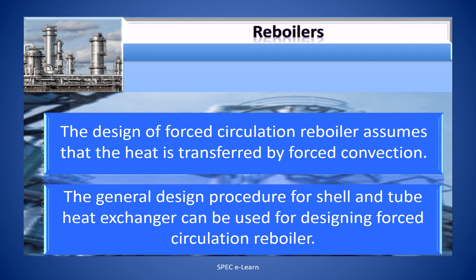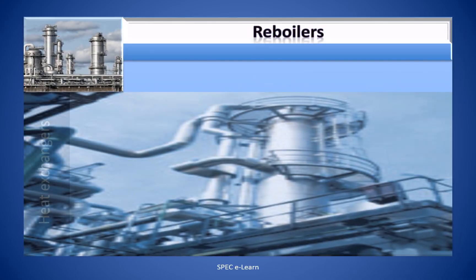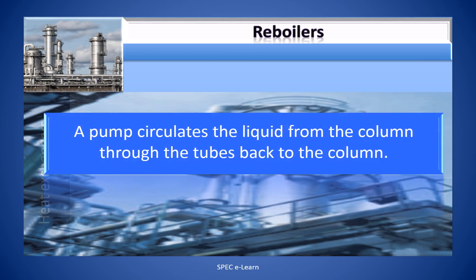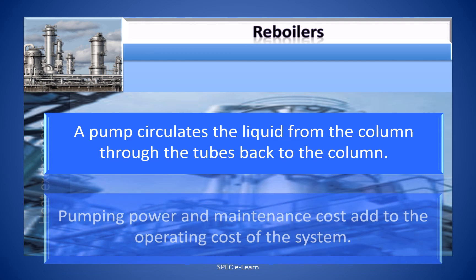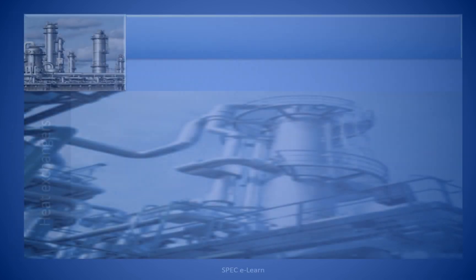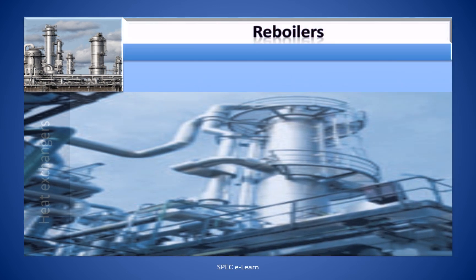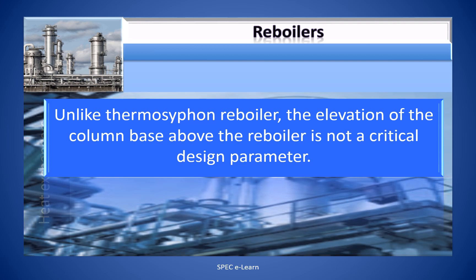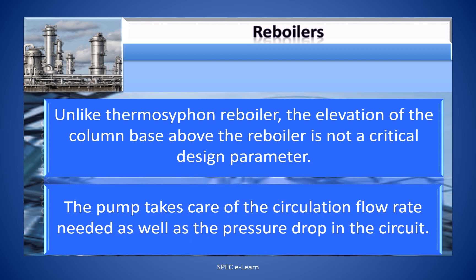The design of a forced circulation reboiler assumes that heat is transferred by forced convection. The general design procedure for shell and tube heat exchangers can be used for designing forced circulation reboilers. A pump circulates liquid from the column through the tubes and back to the column. The pumping power and maintenance costs add to the operating cost of the system. Unlike the thermosyphon reboiler, the elevation of the column base above the reboiler is not a critical design parameter, as the pump takes care of the circulation flow rate and pressure drop in the circuit.